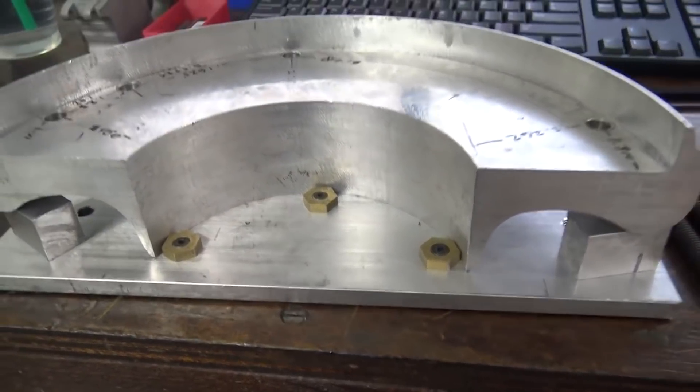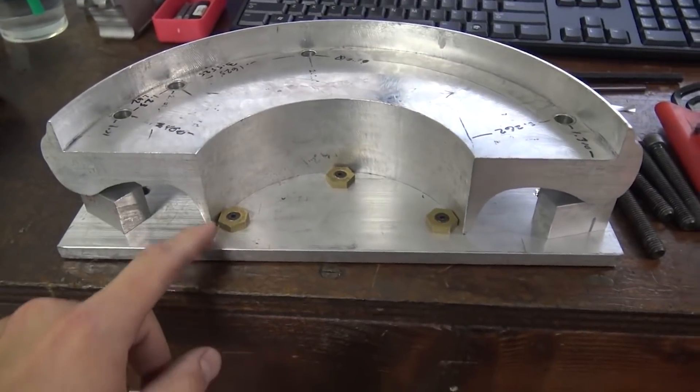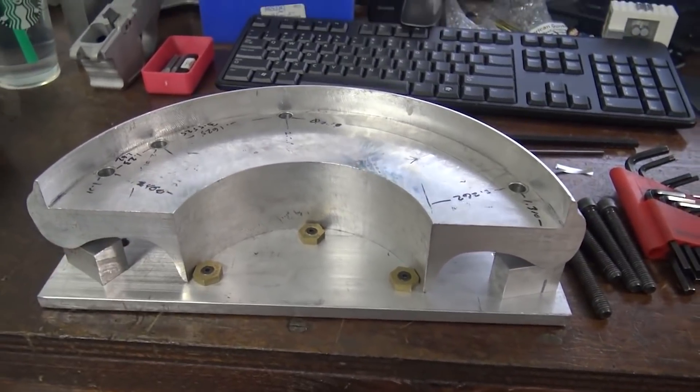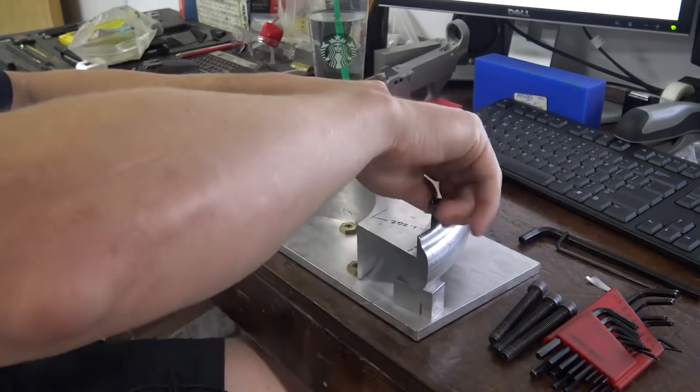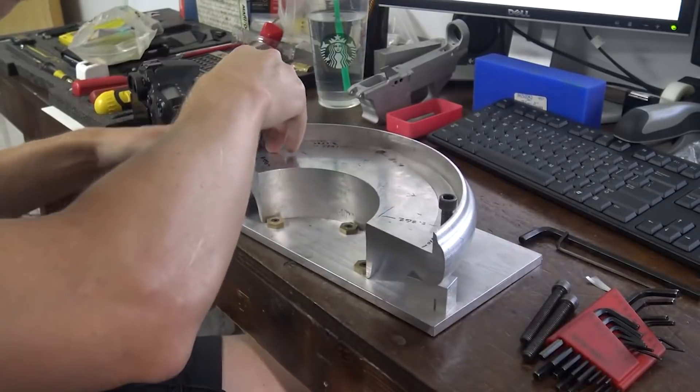We use Mighty Byte hex clamps along the interior diameter and then we machined spacer blocks to fit along the profile of the part to stabilize it, combined with the existing screw holes and fasteners to secure it down.